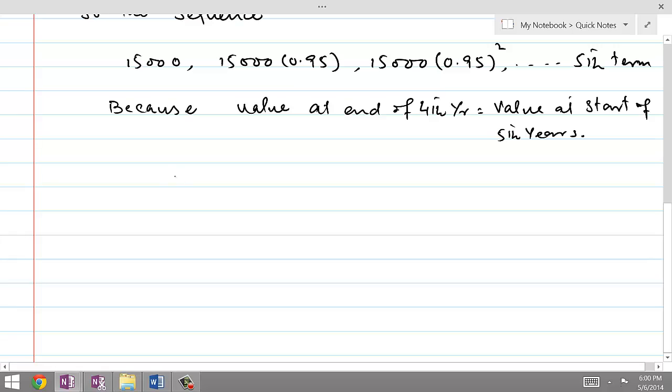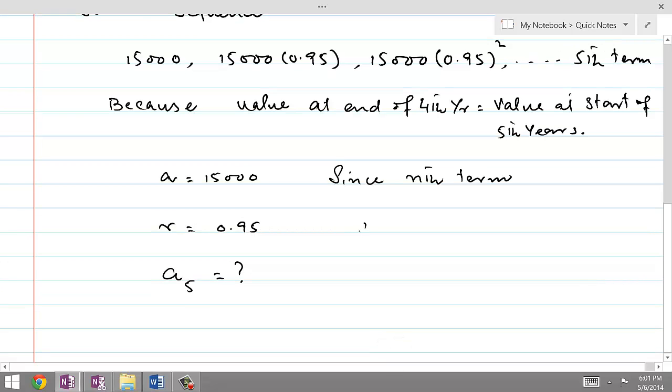Anyway, now A is equal to 15,000, R is equal to 0.95, and we are looking at A5. A5 is, since general formula is nth term, An equal to a times r to the n minus 1.